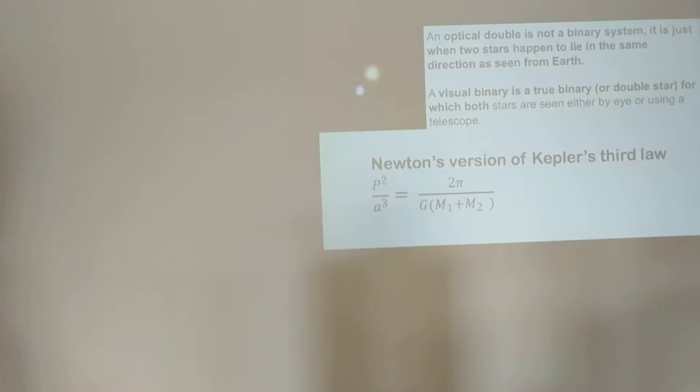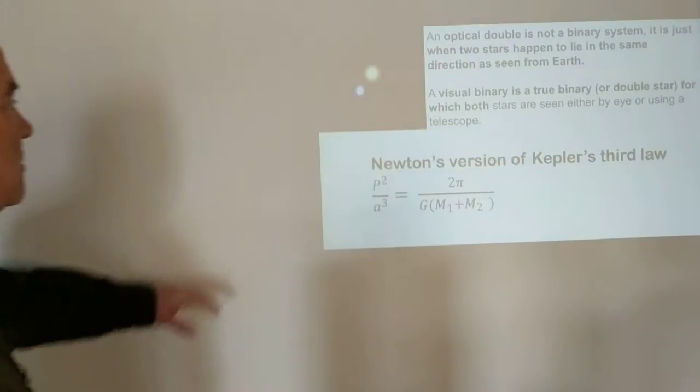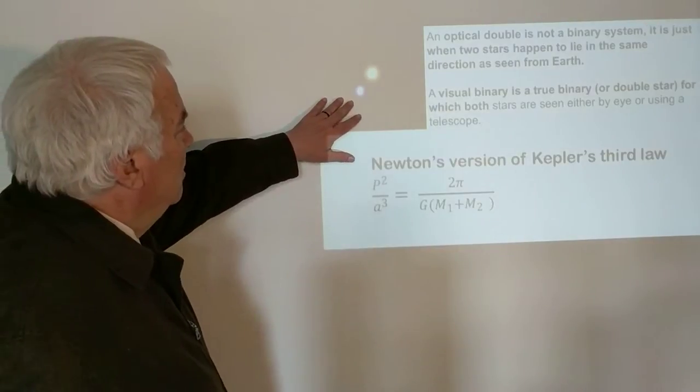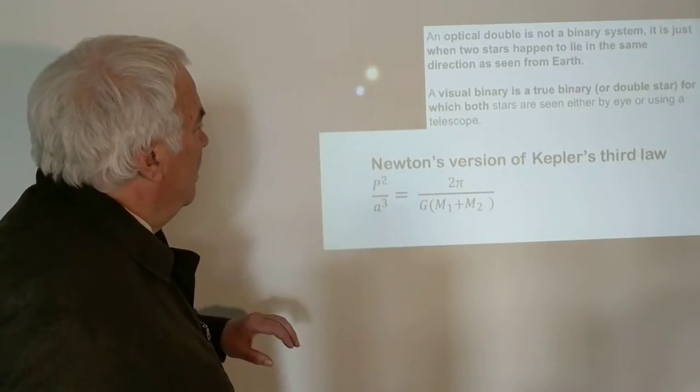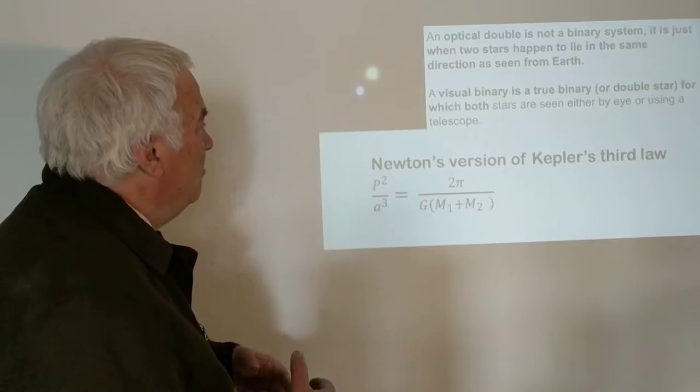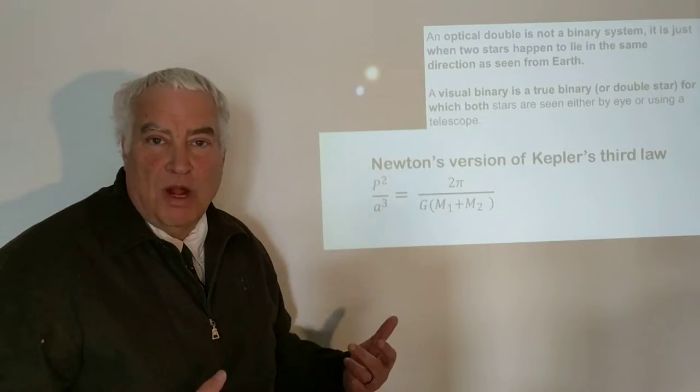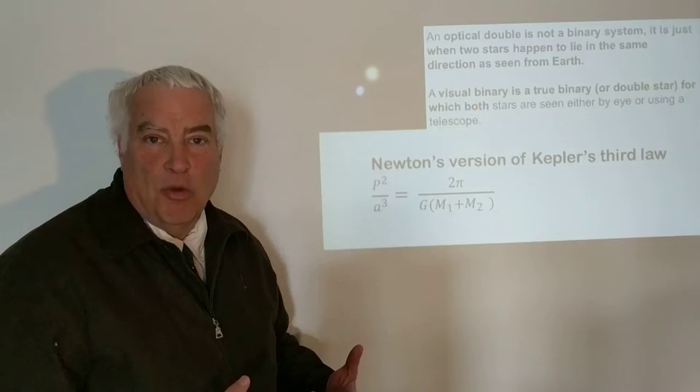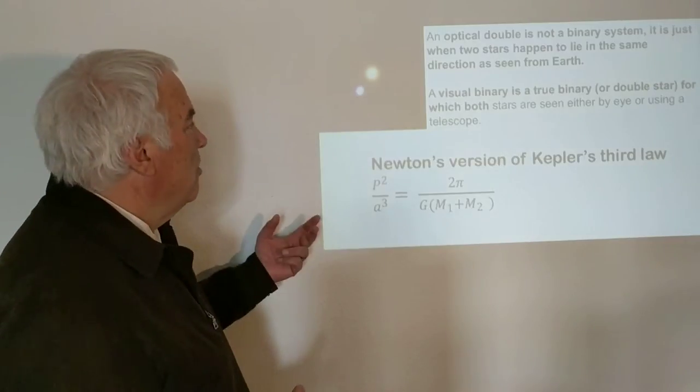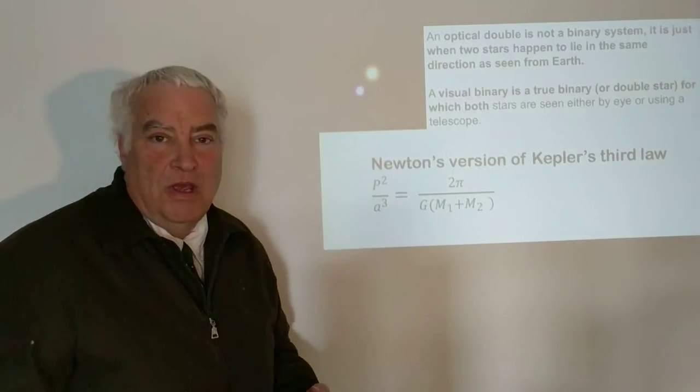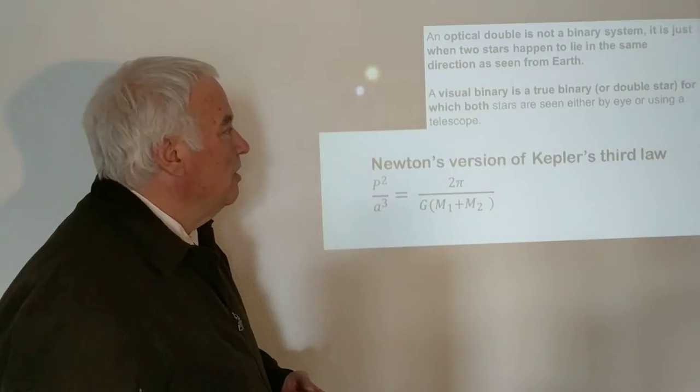An optical double is not a binary system. It's just when you have two stars that happen to be in the same direction as seen from Earth. Over time you can watch and see that there is no orbit taking place. One star is close, the other star is further away. This is an optical double.